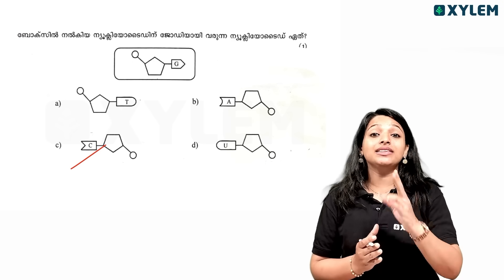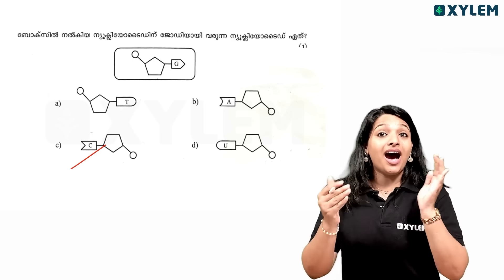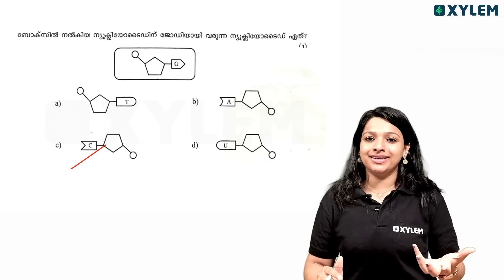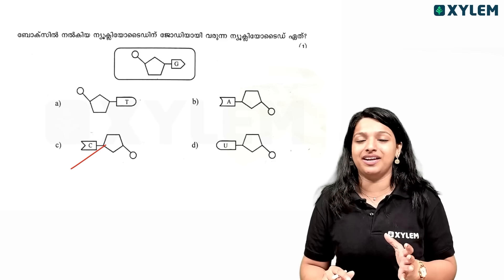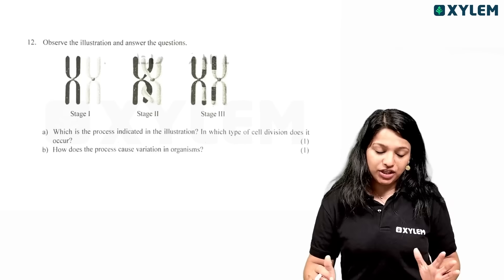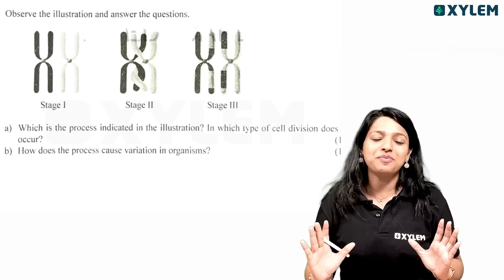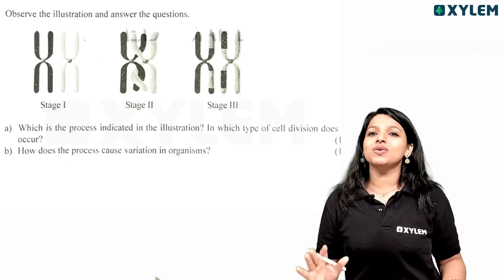In RNA, adenine pairs with uracil instead of thymine. This is an easy way to remember. This is a simple concept.